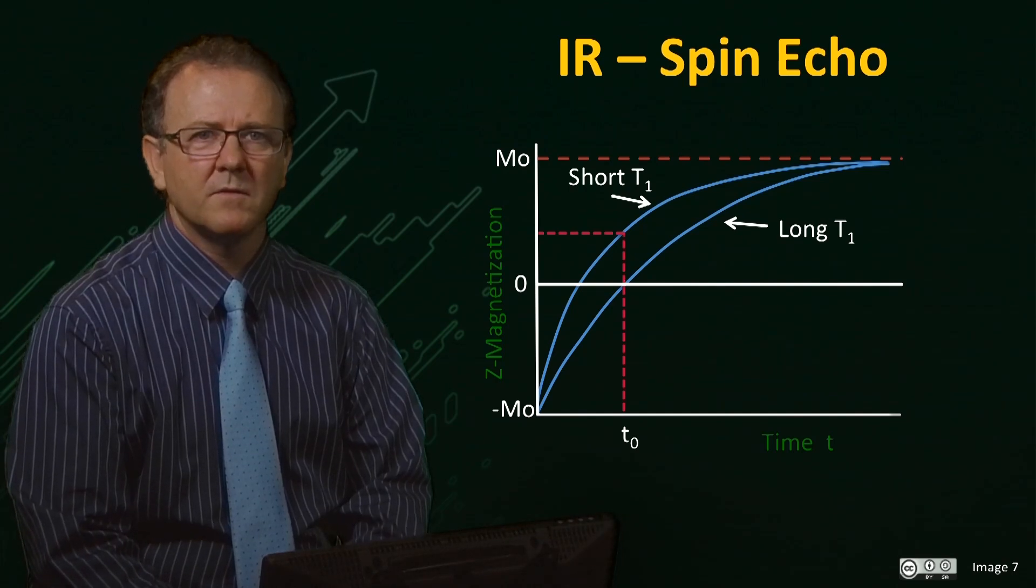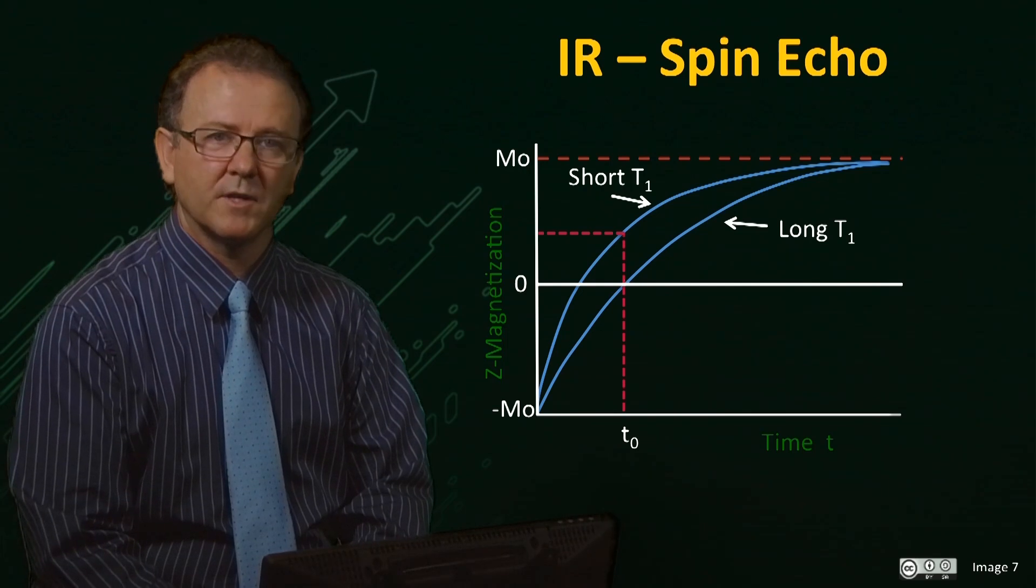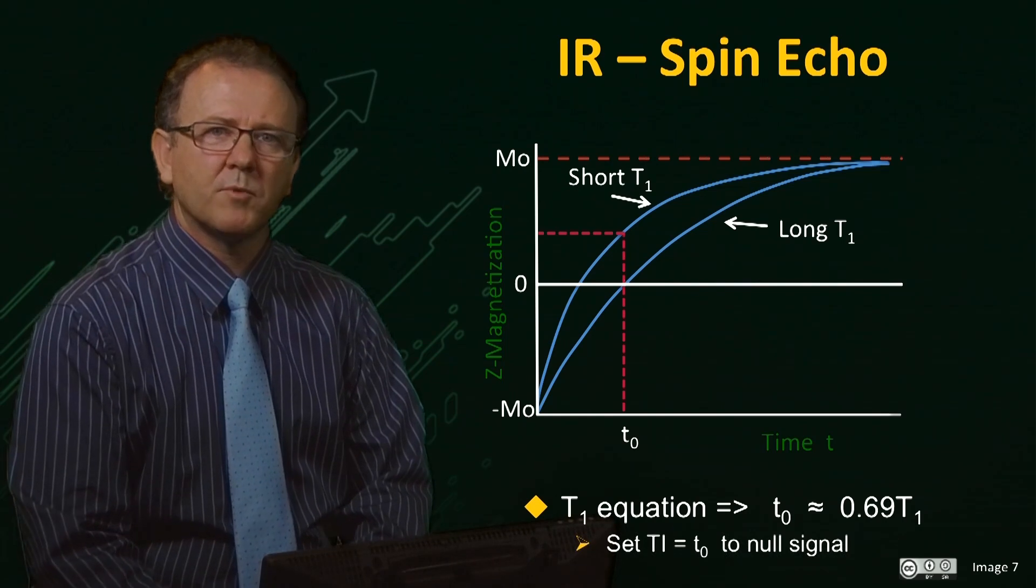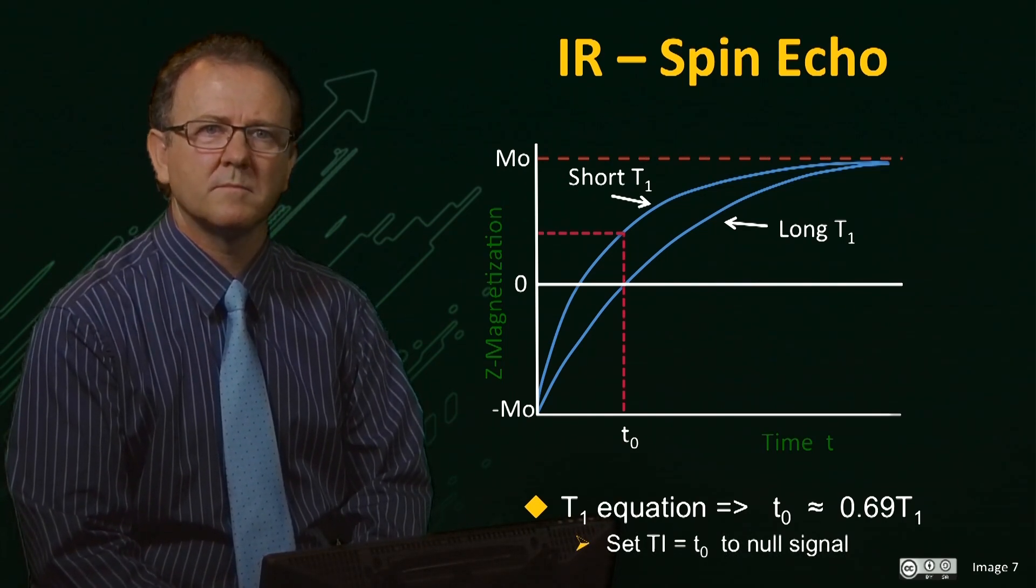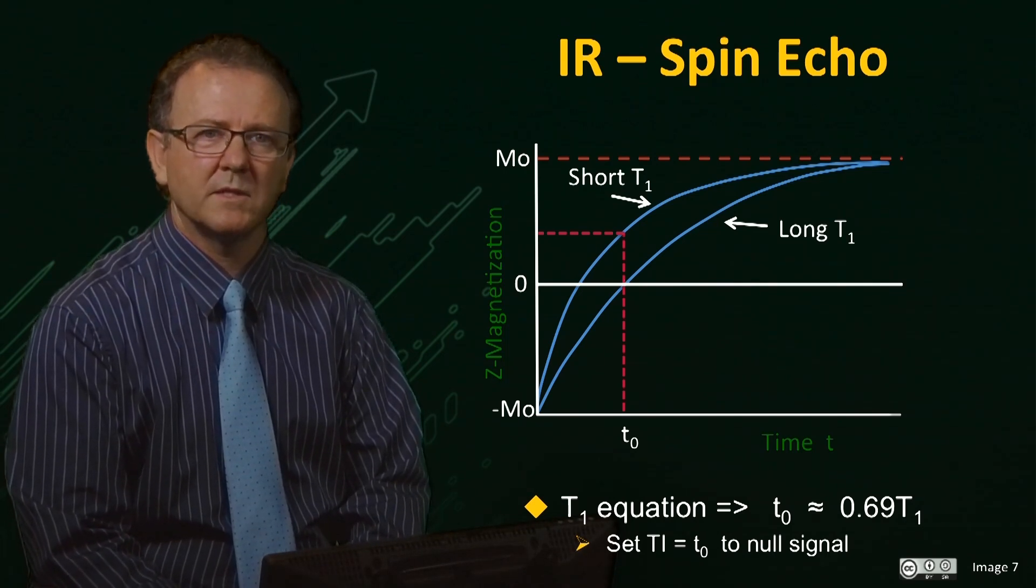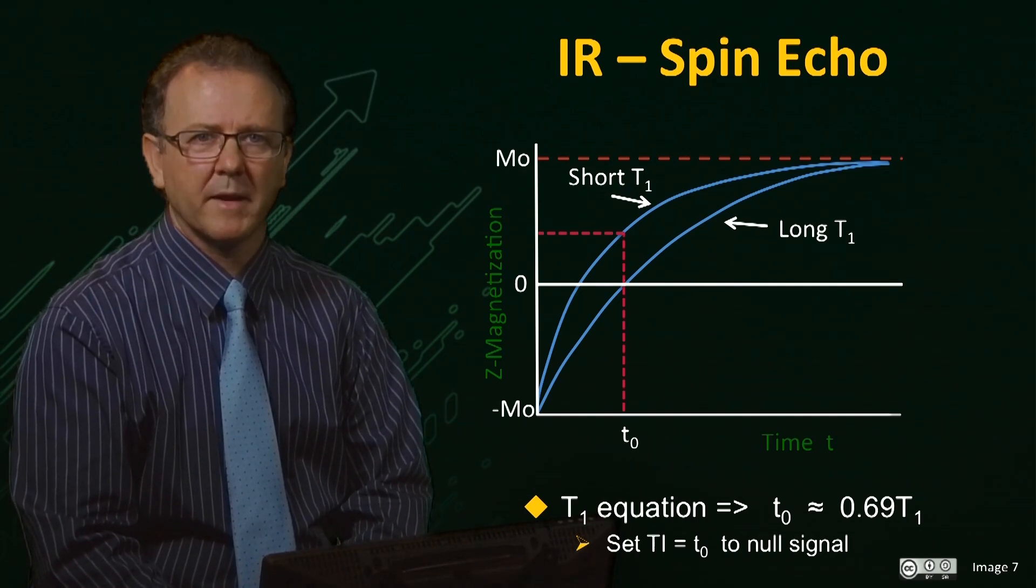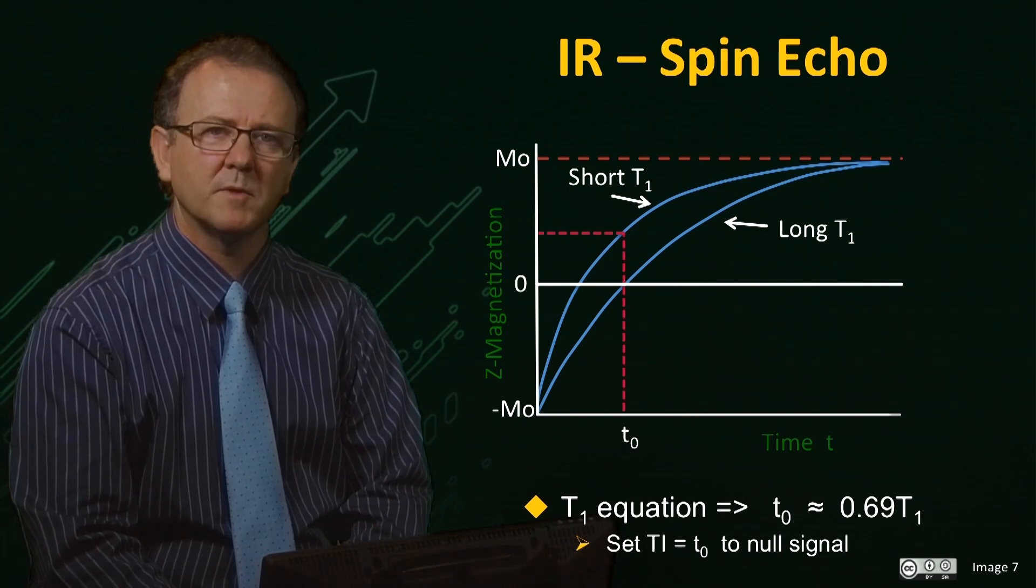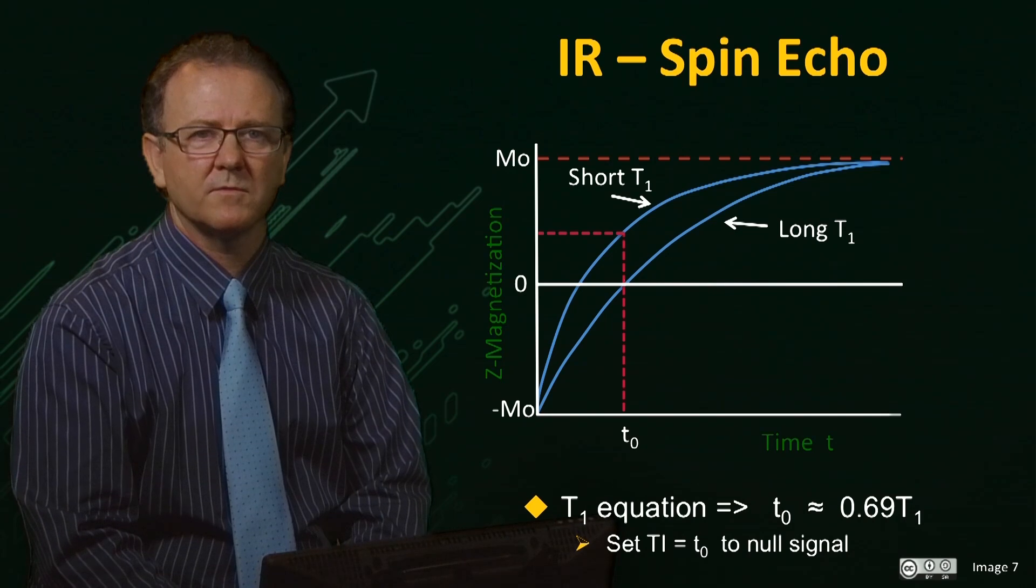In general, the equation that describes the relaxation of magnetization after an inversion pulse predicts that the null point T0 is approximately given by 0.69 times the T1, provided the magnetization is allowed to fully relax between the acquisitions. If the TR value is short so that the magnetization does not fully equilibrate between phase encoding increments, then the null time will be shorter and will depend on the value of TR.